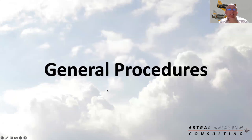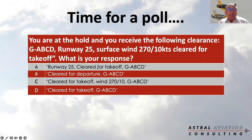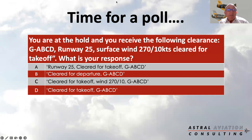Welcome, everybody. Just before we get into detail, let's start with a quick question. You're at the hold and you receive the following clearance: Golf Alpha Bravo Charlie Delta, Runway 25, surface wind 270 degrees, 10 knots, cleared for takeoff. What is your response? The options are: Runway 25 cleared for takeoff followed by the call sign; just cleared for departure followed by the call sign; cleared for takeoff with the wind 270 degrees 10 knots followed by the call sign; or just cleared for takeoff followed by the call sign. Make a choice — nothing like a bit of pressure to start the evening.